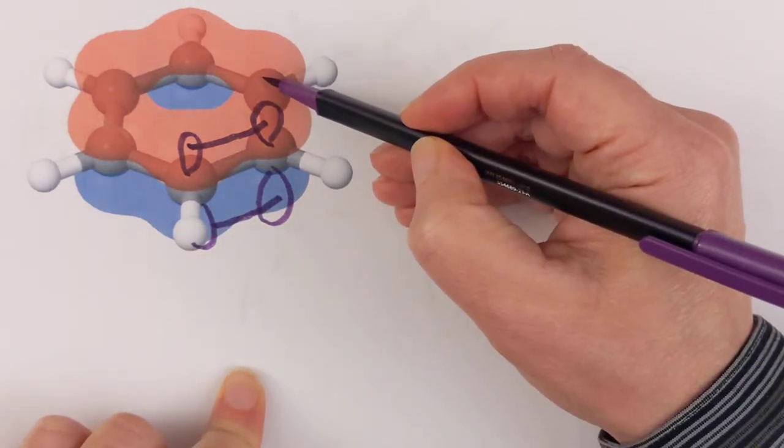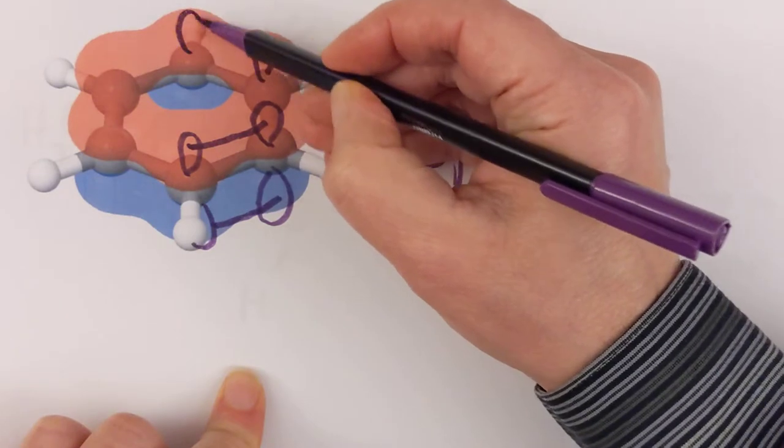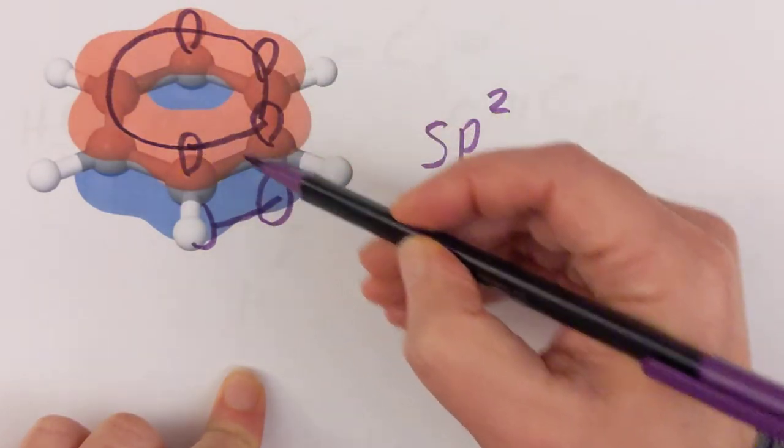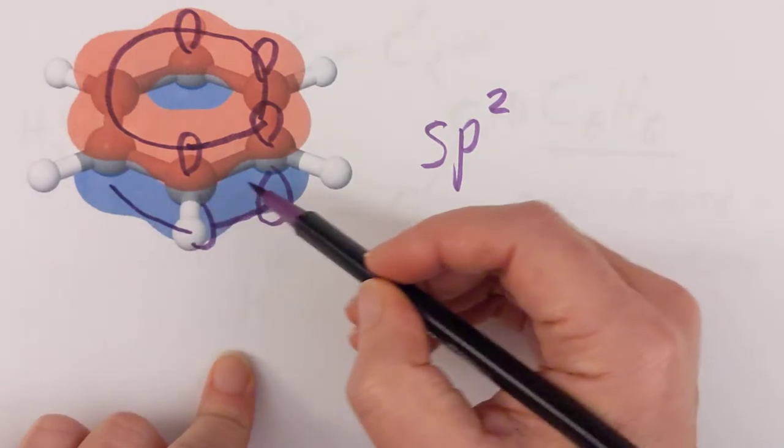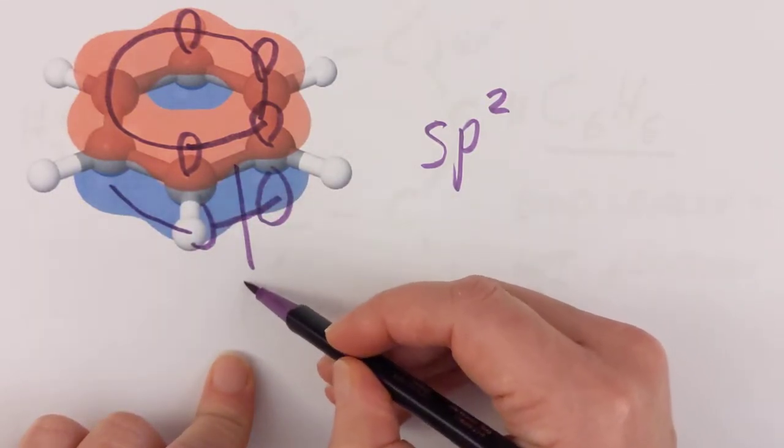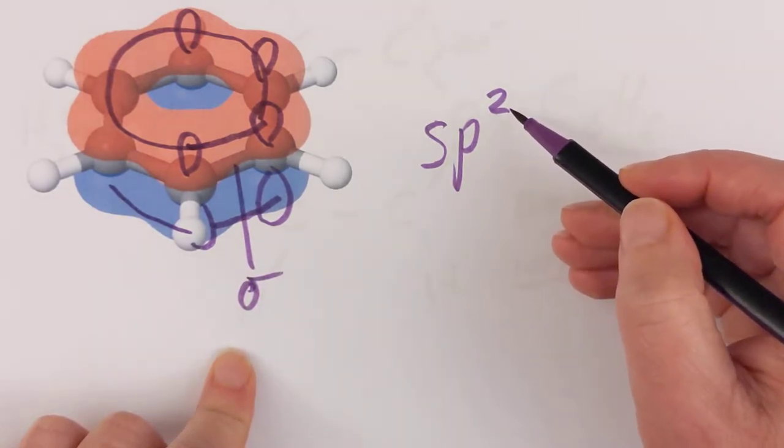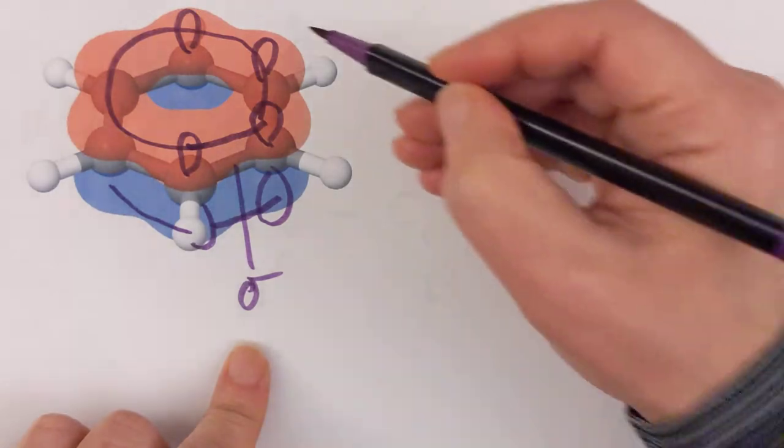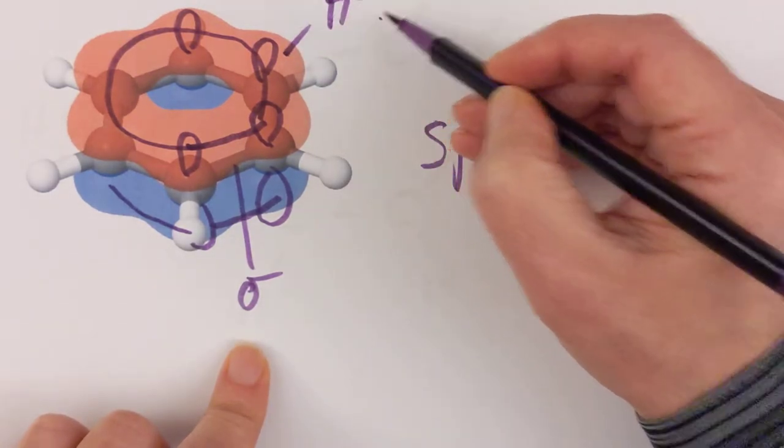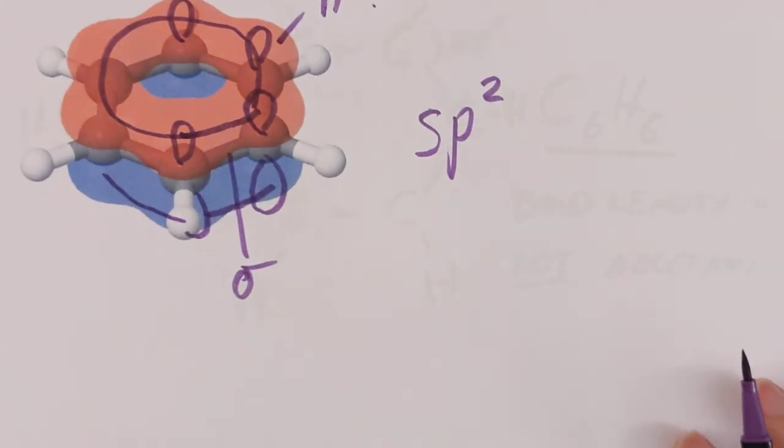So, SP2 hybridization, guys, which means each of these carbons had a spare P orbital above and below the carbon. And so did the neighboring one as well here, above and below. And what's happened is these P orbitals have overlapped sideways like that and formed pi bonds. Really unusual system here, though, as all the orbitals have overlapped with each other. That's why you get this ring of electrons above and below the actual SP2 bonds, which are these. So, these are sigma bonds. There are sigma bonds here in the ring, but there are also pi bonds above and below the ring.